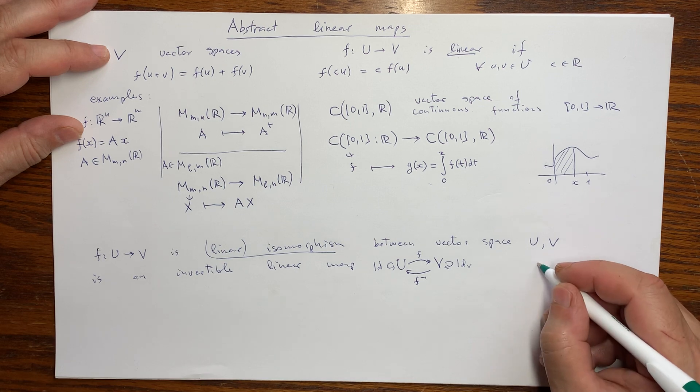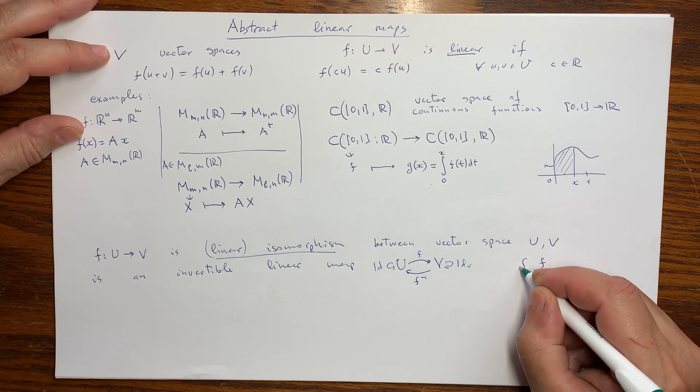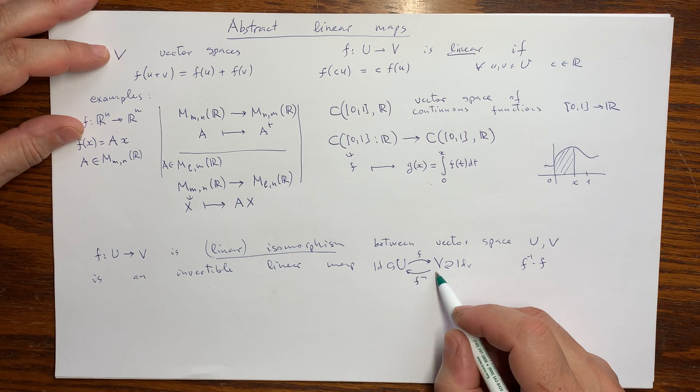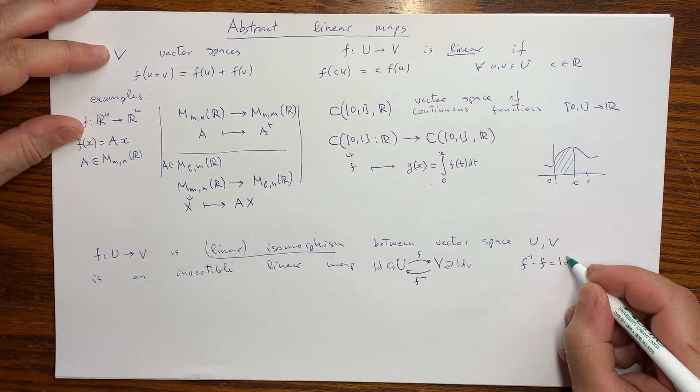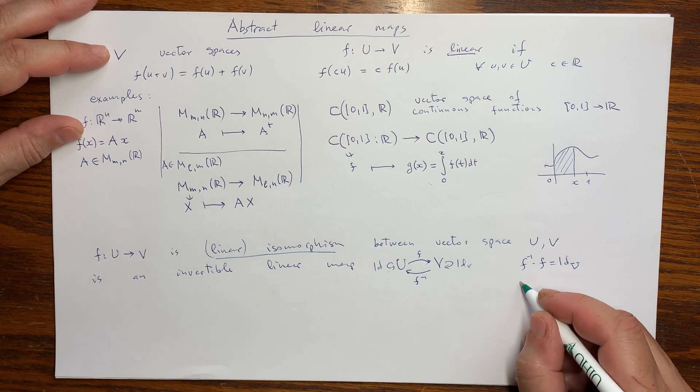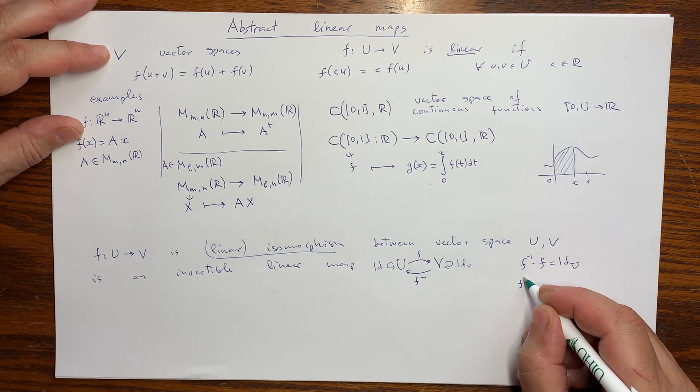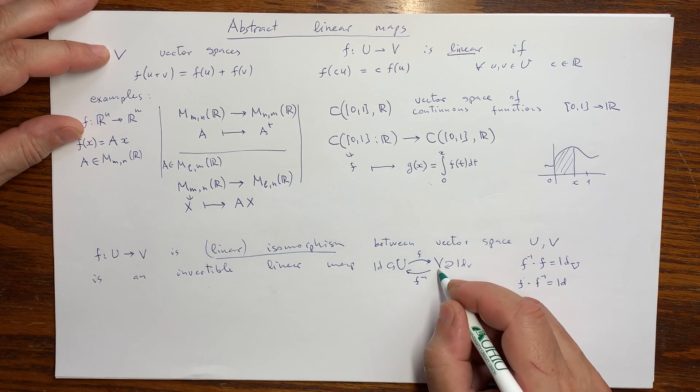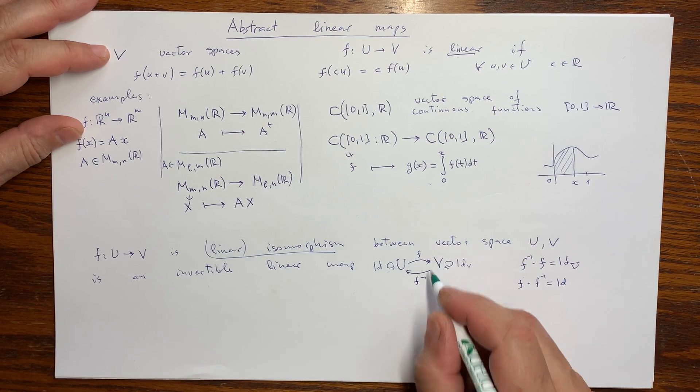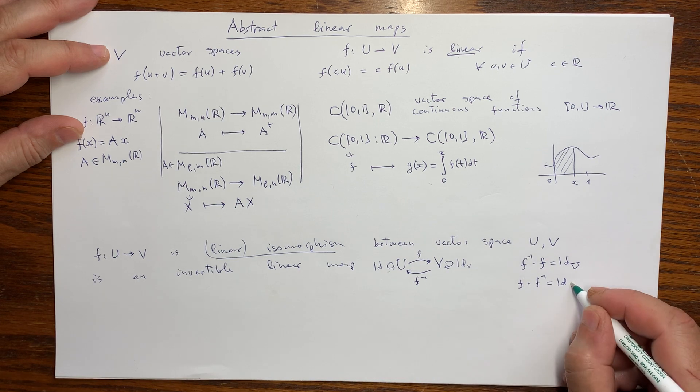So the formal statement is if we do f and follow with f inverse, this is going this way, the composition is identity on U. Otherwise, if we start with inverse and follow with f, that will be going this loop, and that is just the identity on V.